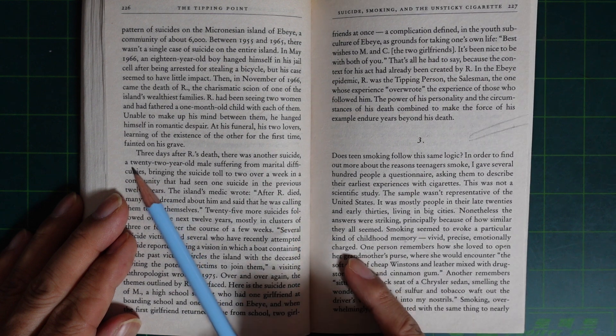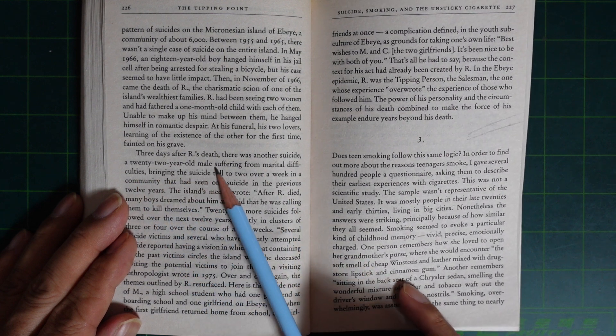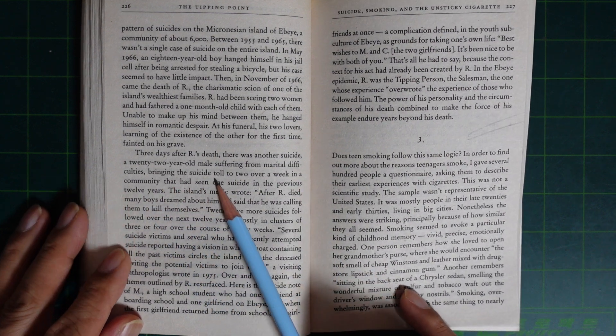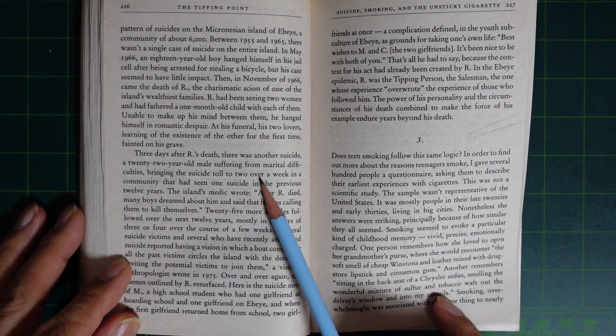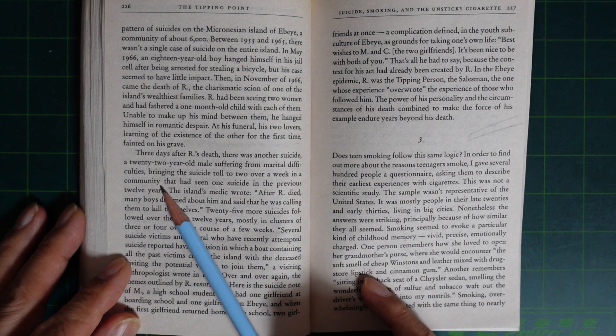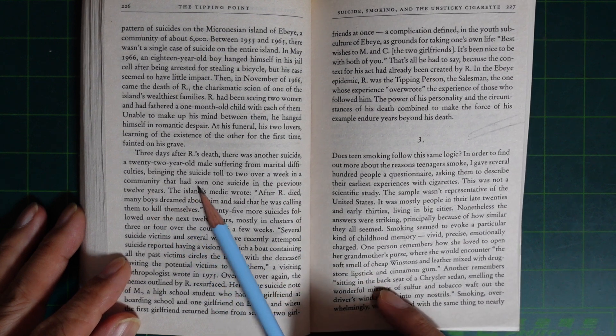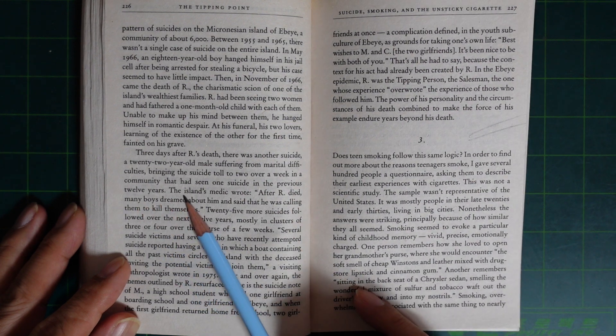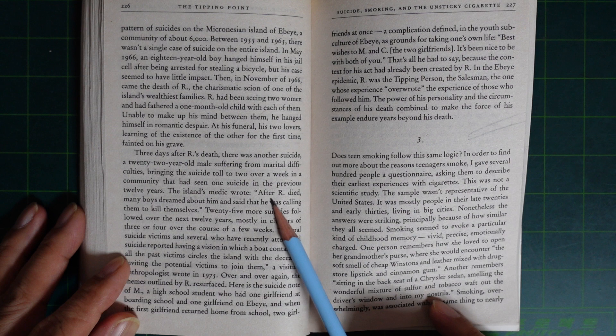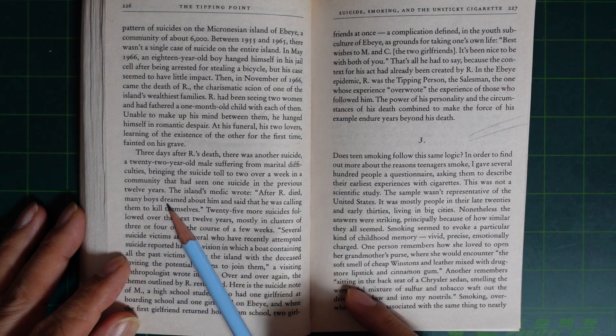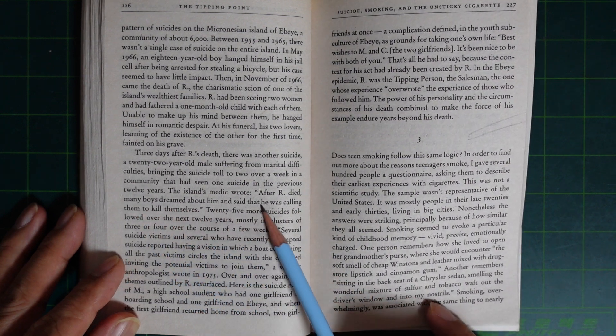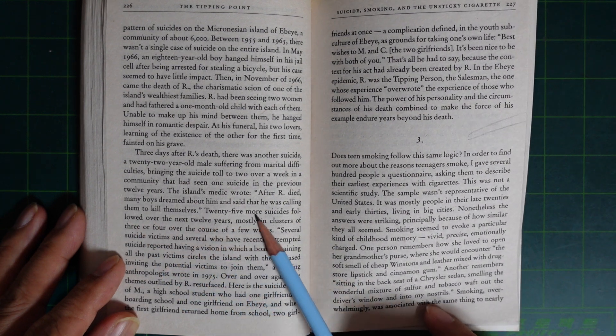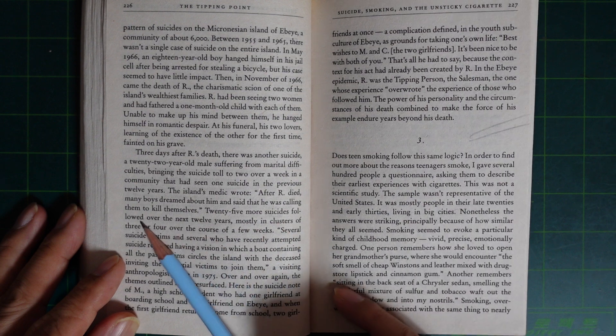A 22-year-old male suffering from marital difficulties, bringing the suicide toll to two in one week in a community that had seen one suicide in the previous 12 years. The island's medic wrote, After R died, many boys dreamed about him and said that he was calling them to kill themselves. 25 more suicides followed over the next 12 years, mostly in clusters of three or four over the course of a few weeks.